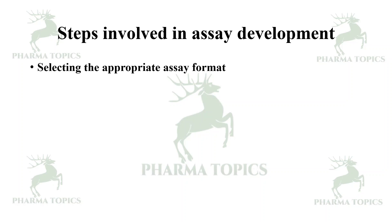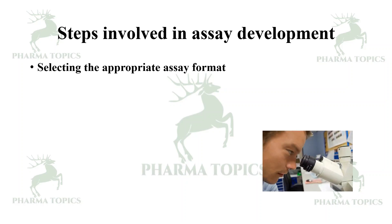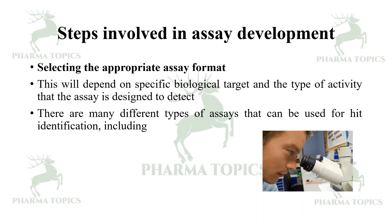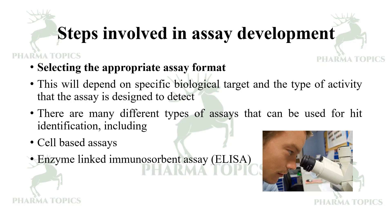Selecting the appropriate assay format is most important, and this will depend on the specific biological target and the type of activity the assay is designed to detect. There are many different types of assays that can be used for hit identification, including cell-based assays, enzyme-linked immunosorbent assay (ELISA), reporter gene assays, and so on.